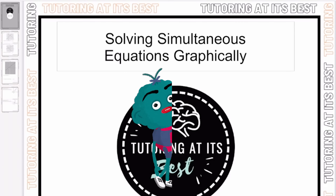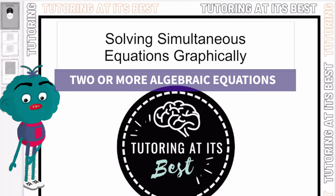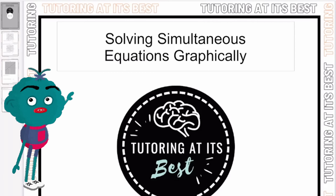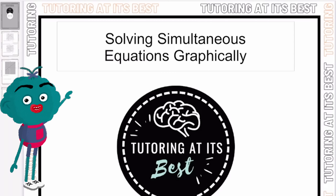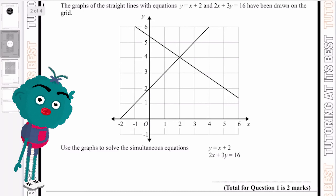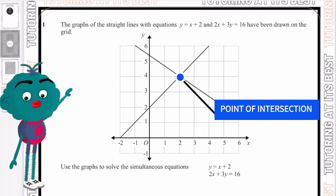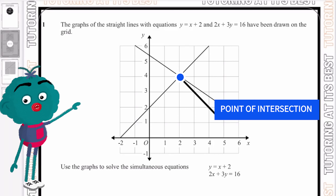What does it mean by graphically? Well, this is the process that allows us to solve two or more algebraic equations that share variables by sketching their graphs. The point or points of intersection give the solutions to these simultaneous equations, because at the point of intersection the two equations are equal to one another and therefore the values of the variables are the same for both equations.